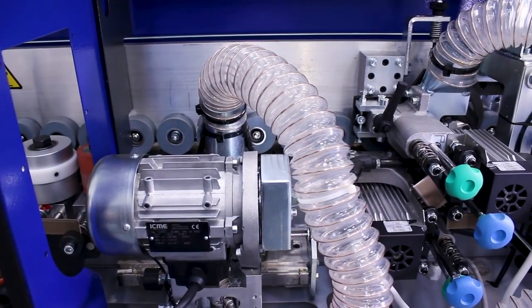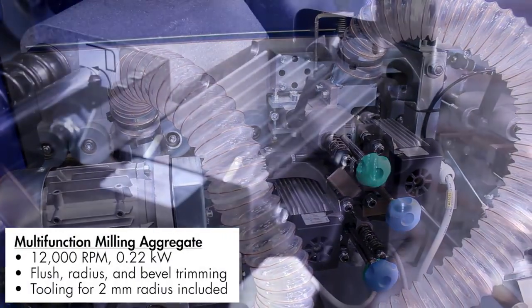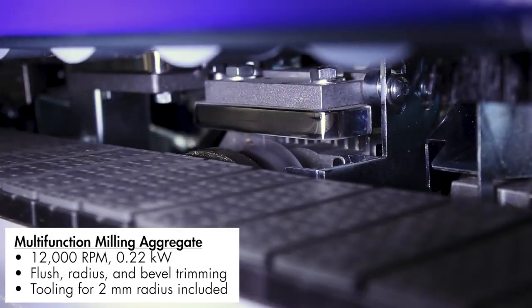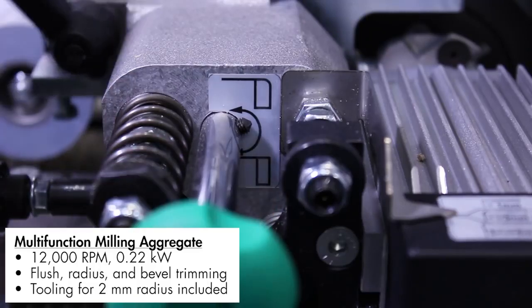The next unit is the new multi-function milling aggregate, which combines flush, radius and bevel trimming into a single, space-saving unit. Adjustment of the setting is quick and easy, with 2mm radius tooling included as standard.